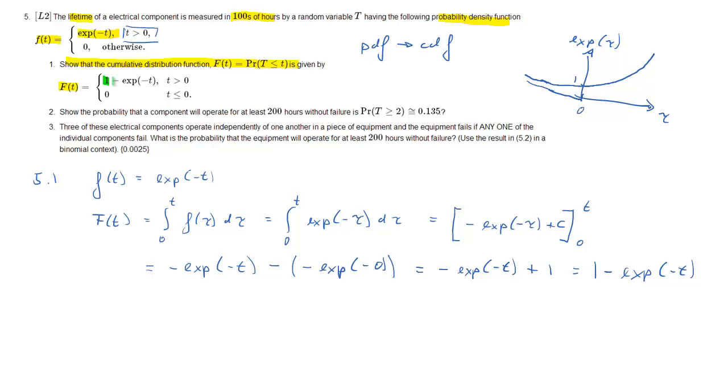So therefore the exponential of negative 0 is just 1, and then therefore we have 1 minus the exponential of negative t. So that was the first part of the question.